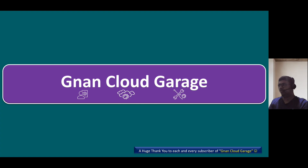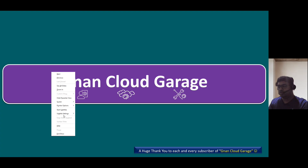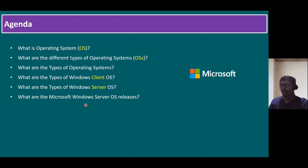Hi everyone, welcome to the NAND Cloud Garage. In this session, I'm going to talk about what are all the types of operating systems. Before going to talk about the type of operating system, we should understand what is an operating system — in short form, we call it OS — and what are the different types of operating systems, types of Windows client OS, Windows Server OS, and Microsoft Windows Server OS releases. Today I'm mainly focusing on the Windows operating system. In later sessions, I will focus on other flavors like Red Hat Linux.